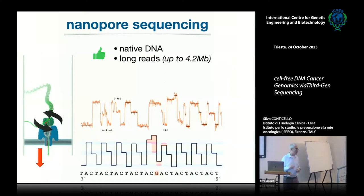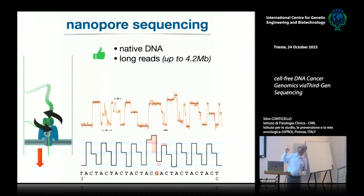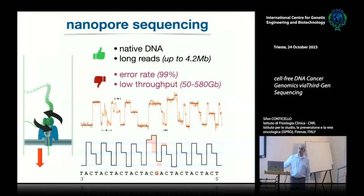The advantages of nanopore sequencing are that we sequence native DNA — you don't rely on re-synthesizing DNA like in Illumina — and you can read very long reads. The world record is 4.4 million base pairs for a single read; in our lab it's 1.3 million. Of course for liquid biopsies that doesn't matter since our fragments are very small. The cons are the error rate, which compared to Illumina is quite poor — with newer chemistry you reach 99.4% accuracy, far from the 99.99% of Illumina — and throughput is not as good yet.